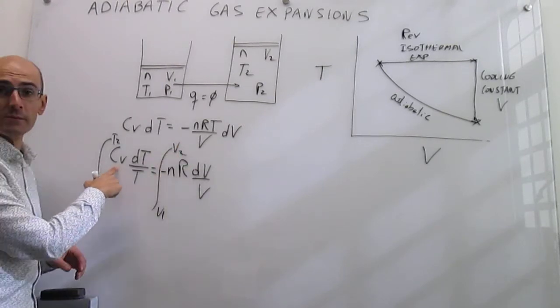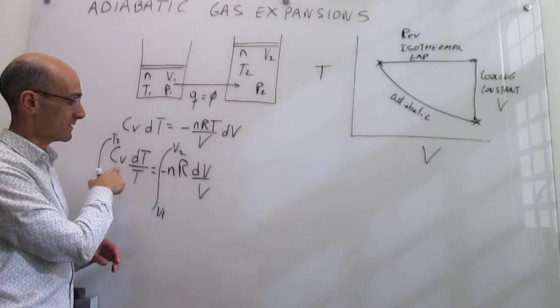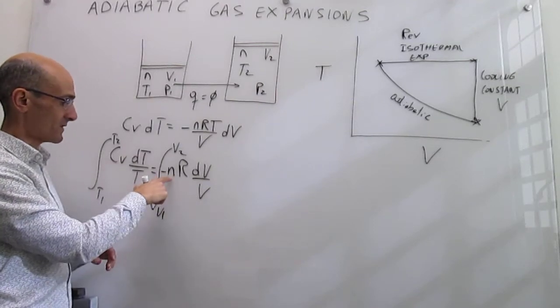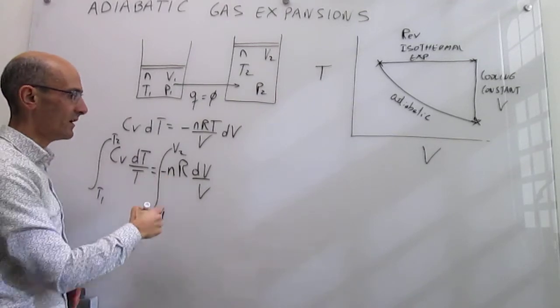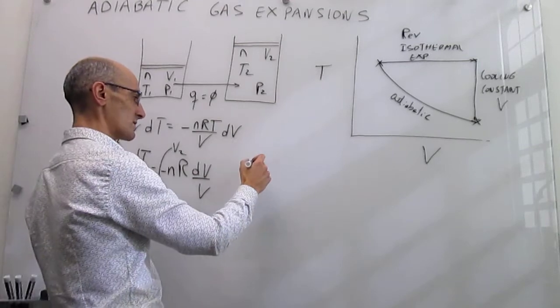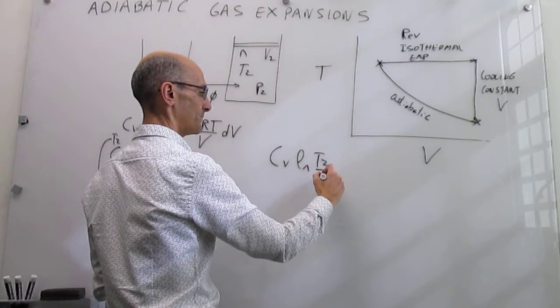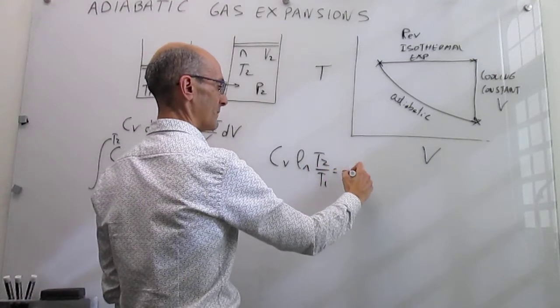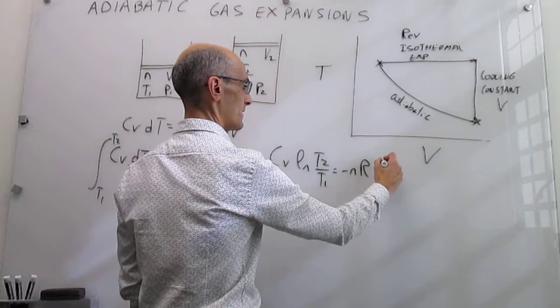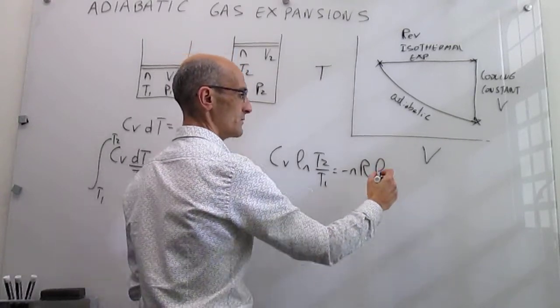We're going to assume that this heat capacity at constant volume is constant, and then of course the number of moles is constant, and R is constant, so all these works out to be c sub v natural log of T2 over T1 is equal to minus nR natural log of V2 over V1.